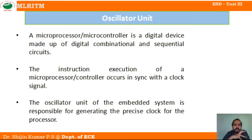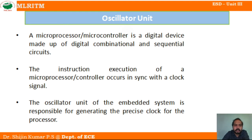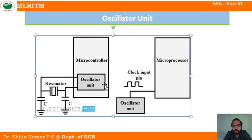The three basic operations inside a processor are fetching, decoding, and executing. Each of these operations happens during one clock cycle — fetching in one cycle, decoding in the next, and execution in the next. All these operations depend on clock signals generated by the oscillator.